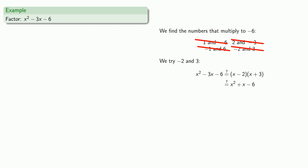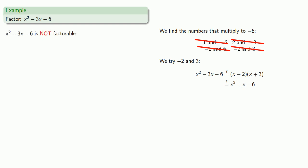And here's an important thing. We've tried all of the possible factorizations and none of them worked. This means x squared minus 3x minus 6 is not factorable. And this leads to an important idea: not all quadratics can be factored, but you won't know that until you try every possibility.